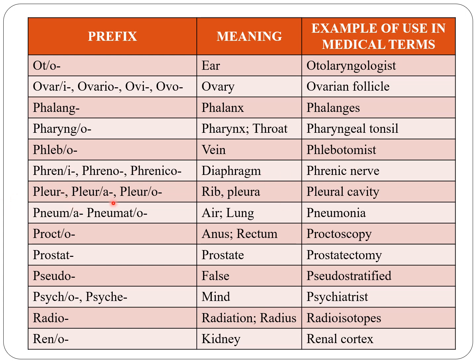Pleuro or pleura indicates rib or pleura — that is the pleural cavity. Pneumo or pneumato indicates air or lung, for example pneumonia.